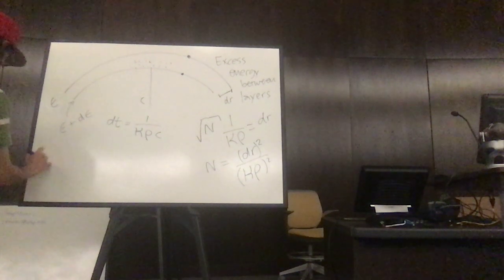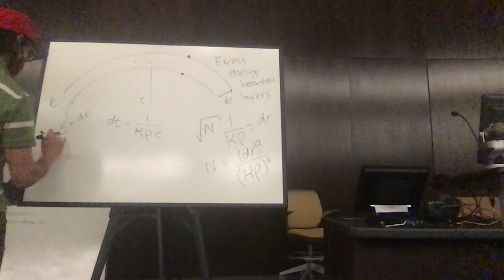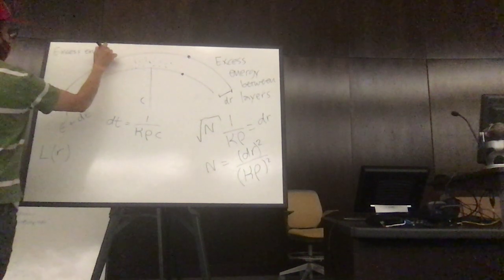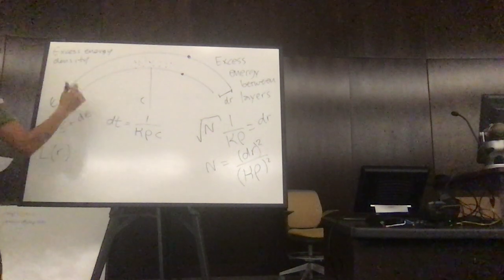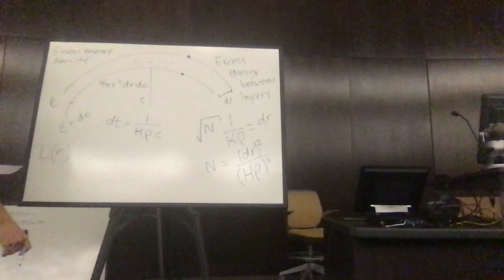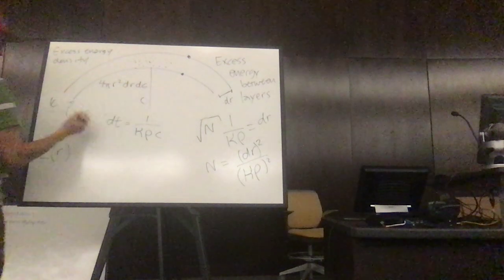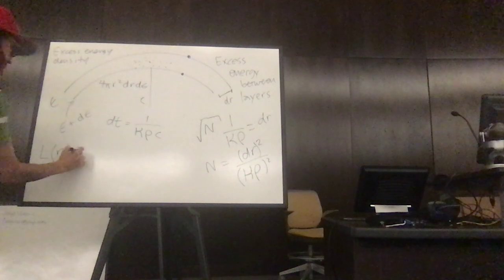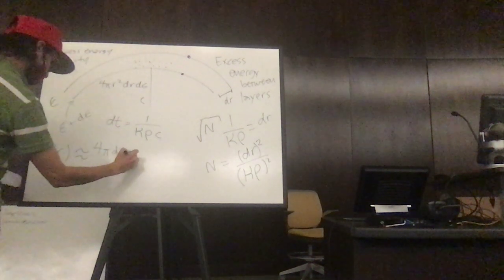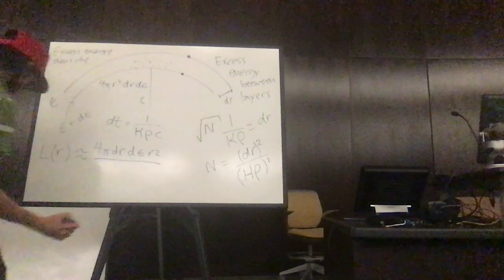So the excess energy density is going to be 4πr² times er dt. So the volume of this thing times the difference between these two. So the luminosity is going to be the excess divided by the time.